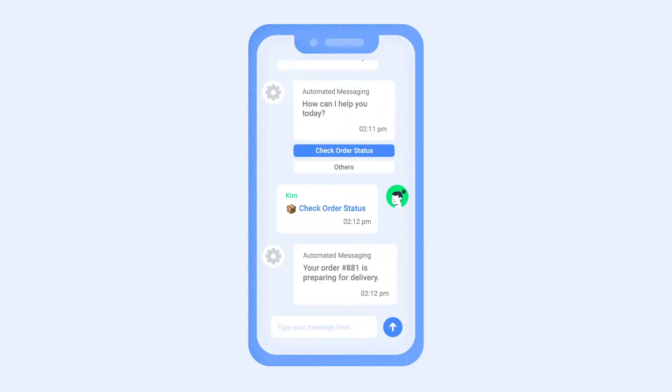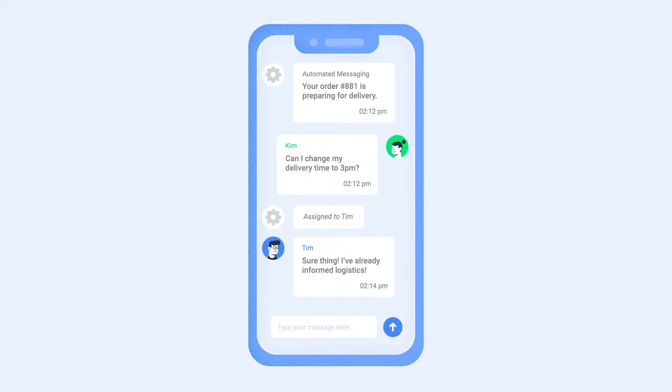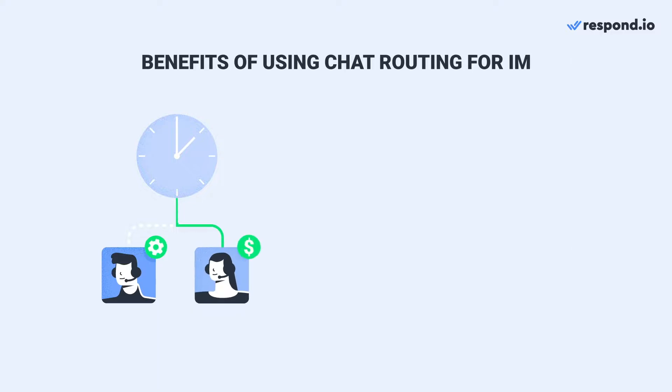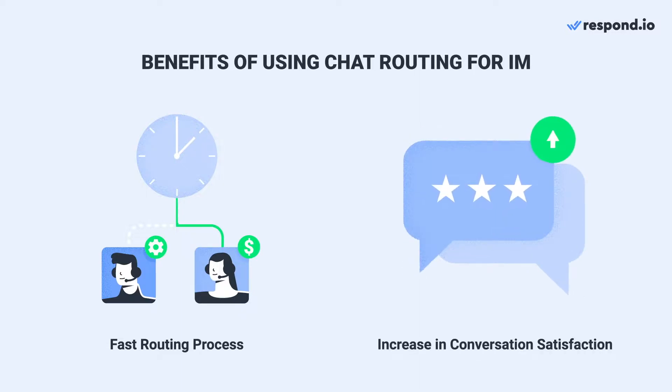For companies with multiple customer-facing teams, effectively routing conversations to the right team is challenging. But with the right strategy, routing can improve the quality of customer conversations. Unlike traditional email tickets, customers expect immediate replies with messaging. However, chat routing allows automating questions without human intervention, speeding up the process of routing to the right team and increasing conversation satisfaction.